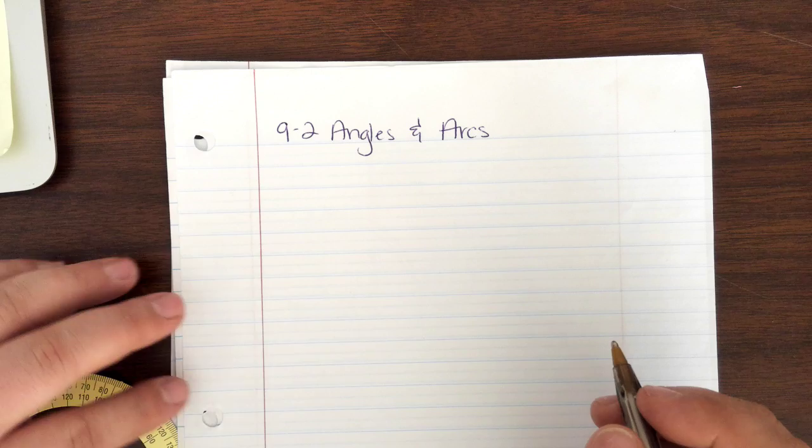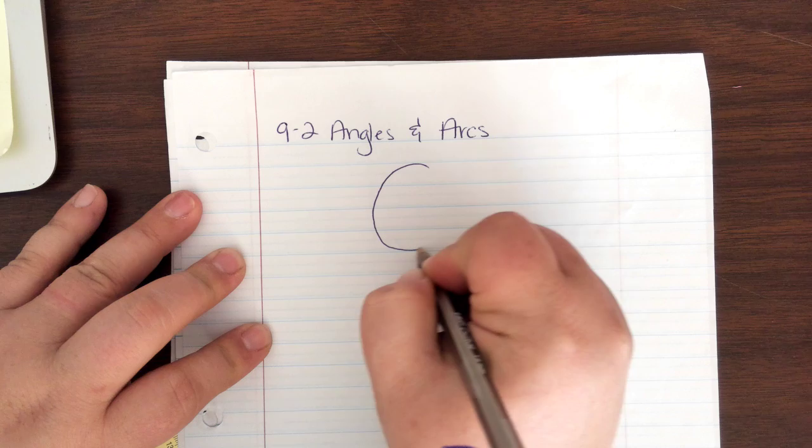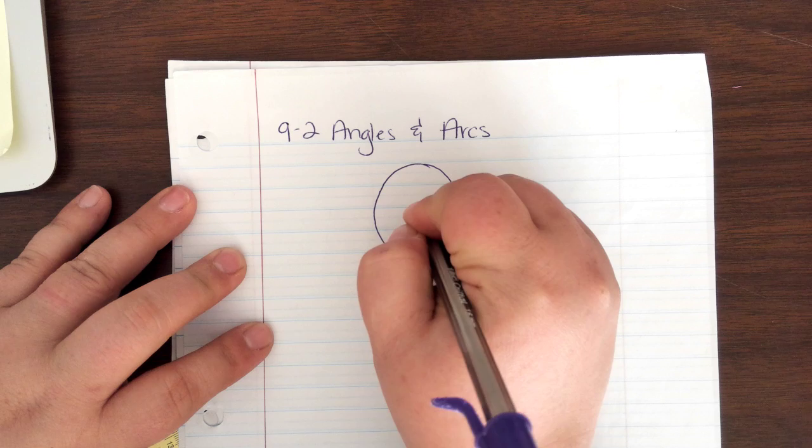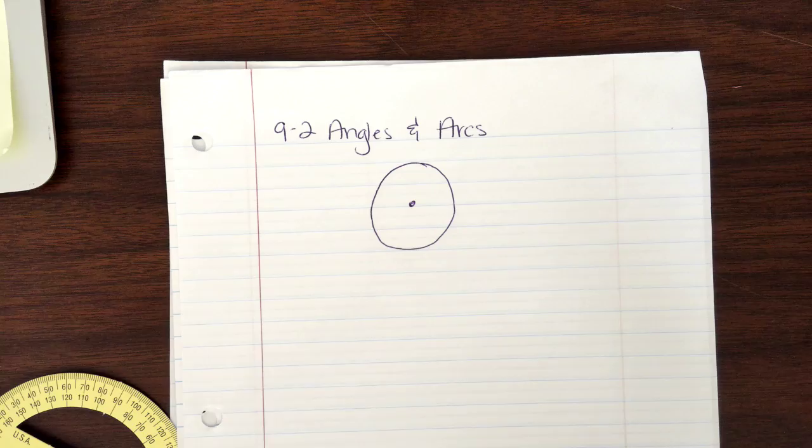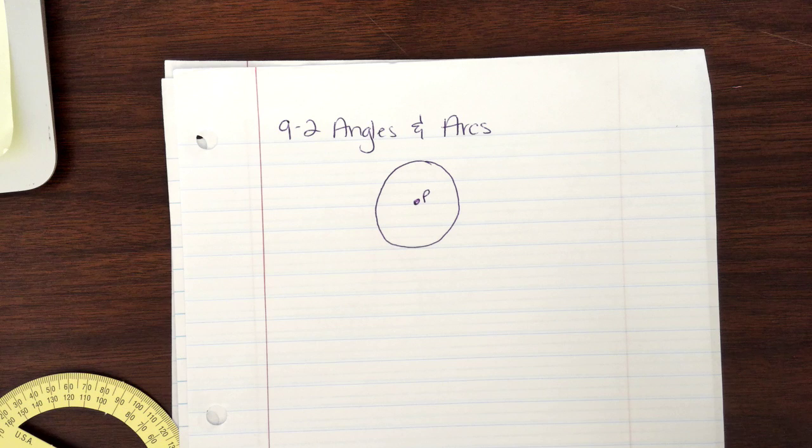Let's make a circle. Does not have to be absolutely beautiful. Look at that. Lovely almost circle. Whenever you're making a circle, ever, ever, make sure you give it a center point. And we will label our center P because we always do and we don't know why.